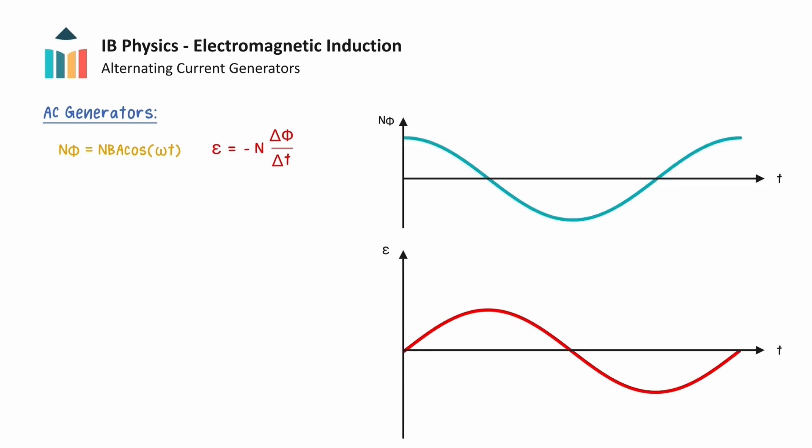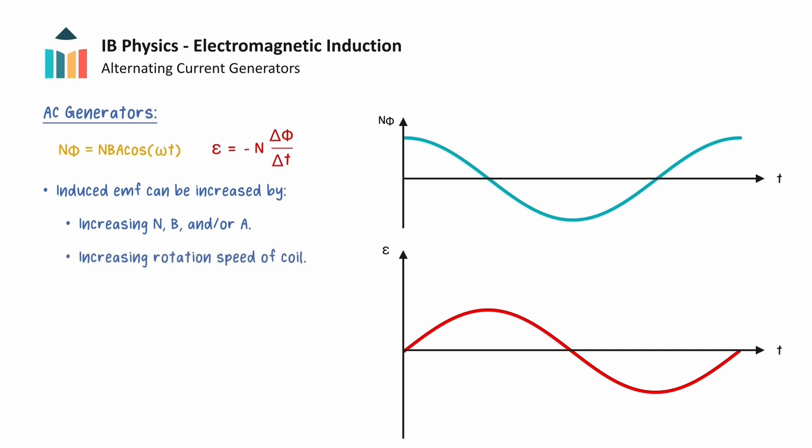We know that the magnitude of the induced EMF is dependent on the rate of change of flux linkage with time. So we can increase the magnitude of the EMF induced from an AC generator by increasing the number of turns on the rotating coil N, the magnetic flux density B, and the area of the coil A, as these will all increase the flux linkage.